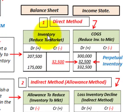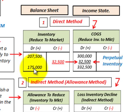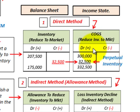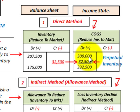For the direct method, we have our balance sheet account and our income statement account. We have to reduce inventory to the lower cost of market — we had $207,500 at cost, and it's now worth $175,000 using the lower cost of market valuation. So we credit our inventory account for $32,500. In the direct method this affects cost of goods sold on our income statement, so we debit or increase cost of goods sold for $32,500.